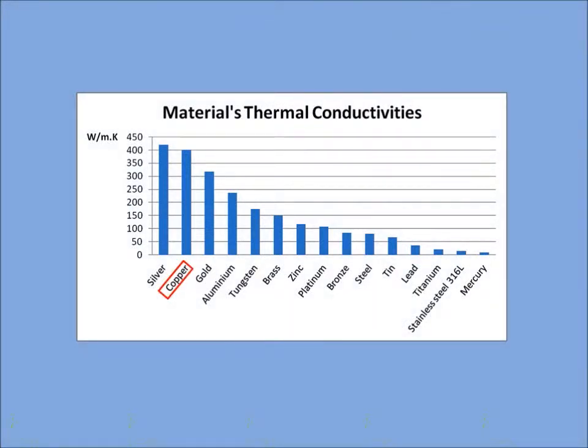Here on this chart, you can see that copper's thermal conductivity lies between silver and gold. We have chosen to make our device out of copper because it offers a good compromise between its high thermal conductivity and its low price.